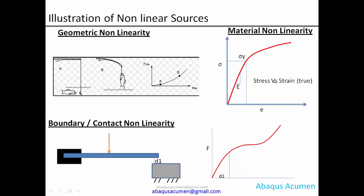Material non-linearity: most metals obey Hooke's law, where stress is proportional to strain. Once the yield strength is exceeded and Hooke's law no longer applies, that is called material non-linearity — in metals it's called plasticity. Polymers have different stress-strain behavior, rubber is highly non-linear, and creep is a long-term non-linear material behavior.